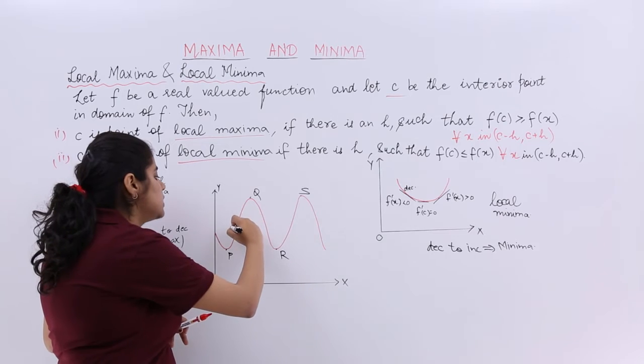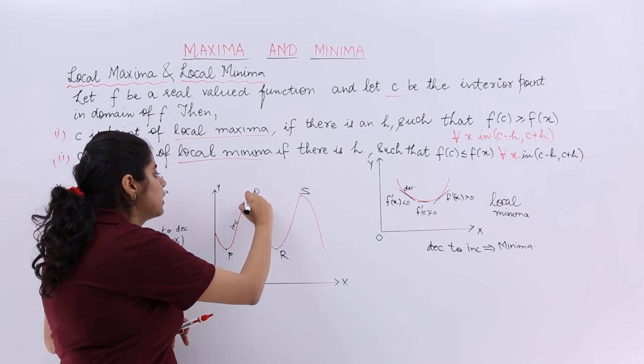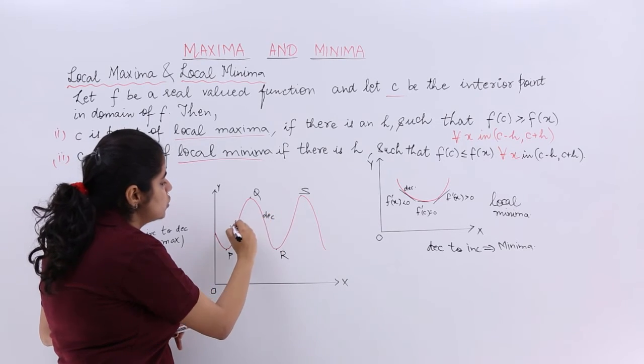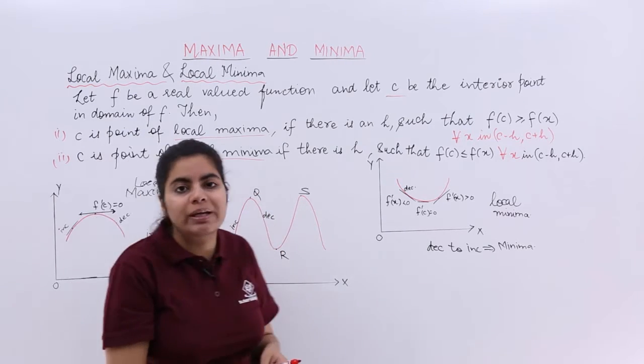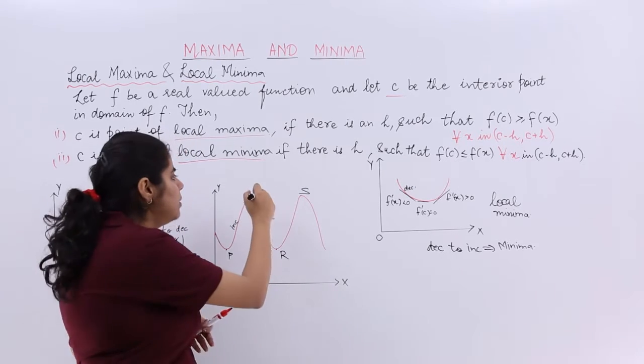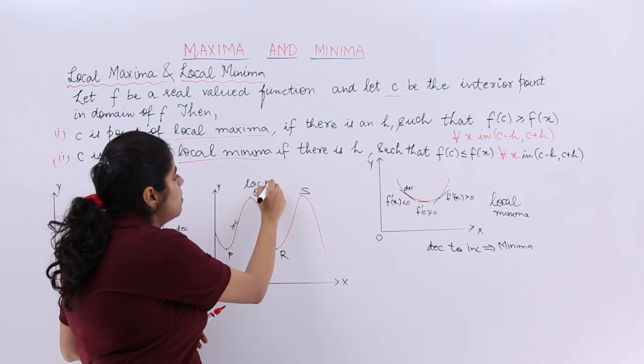Then again you move. So it is increasing. Then it is a turning point. And then it is again decreasing. So increasing to decreasing for Q. Increasing to decreasing is maxima. So Q is a point of local maxima. So it is local maxima.